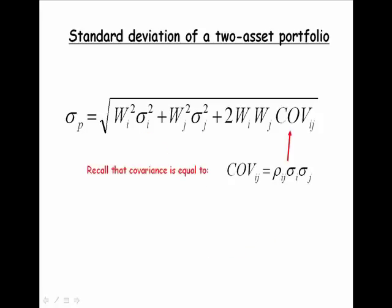There's covariance—we just got through talking about that. Covariance is equal to the correlation between the two assets times the standard deviation of each asset.